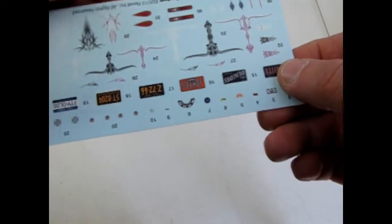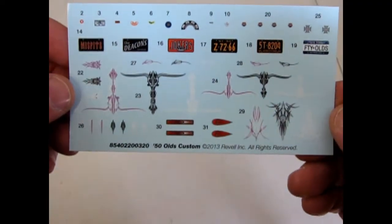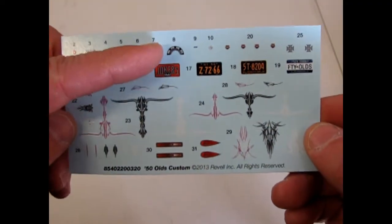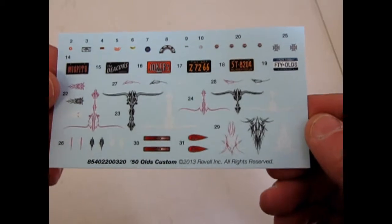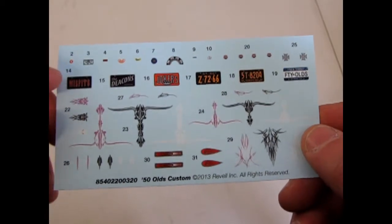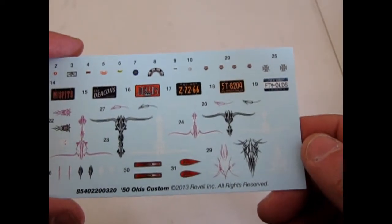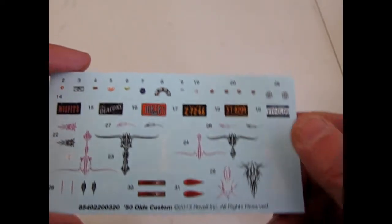And here is the decal sheet, which actually goes this way. Some pinstripes. There's a decal for the instrument panel. And, of course, a lot of the car clubs. The misfits, the deacons, the jokers. Yeah. So you can build some pretty cool things on here.